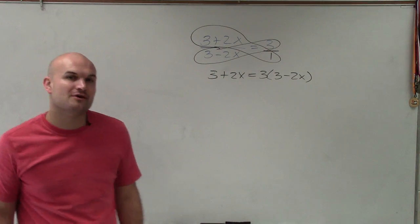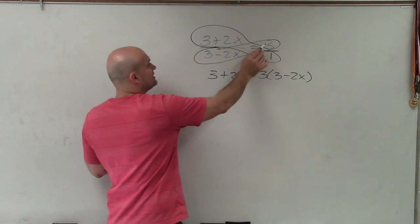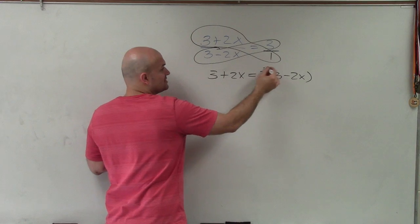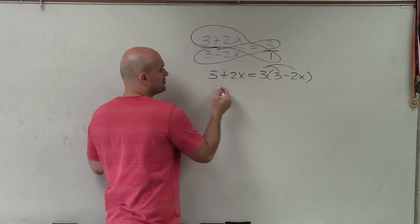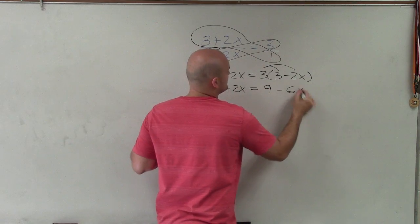So when I apply my cross product, that's the equation that I get. Make sure that when you're multiplying this 3 times expression, you use parentheses. So therefore, you have to use distributive properties. So I have 3 plus 2x is equal to 9 minus 6x.